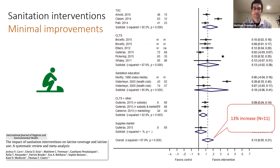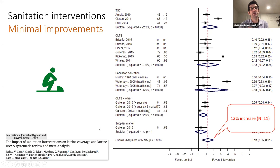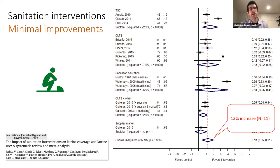How do we move this sector forward? Looking at interventions to improve sanitation coverage, the average change in sanitation coverage across studies was only 13%. We need to get much better at delivering sanitation to achieve higher coverage if we're actually going to have appreciable benefit to diarrheal disease and also the NTDs.